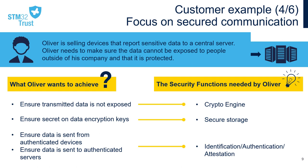Fourth example: Oliver is selling devices that report sensitive data to a central server. Oliver needs to make sure the data cannot be exposed to people outside of his company and that it is protected. To reach his objectives and make sure the data remains secret while being transmitted to the central server, Oliver needs to enable end-to-end secure data communication between his devices and the central server. So he needs to encrypt all the data communication in order to guarantee the integrity and confidentiality of the data exchange and store locally without exposing the encryption key. He also needs to identify and authenticate the devices and the server exchanging this data to make sure these are the right devices talking to the right server.